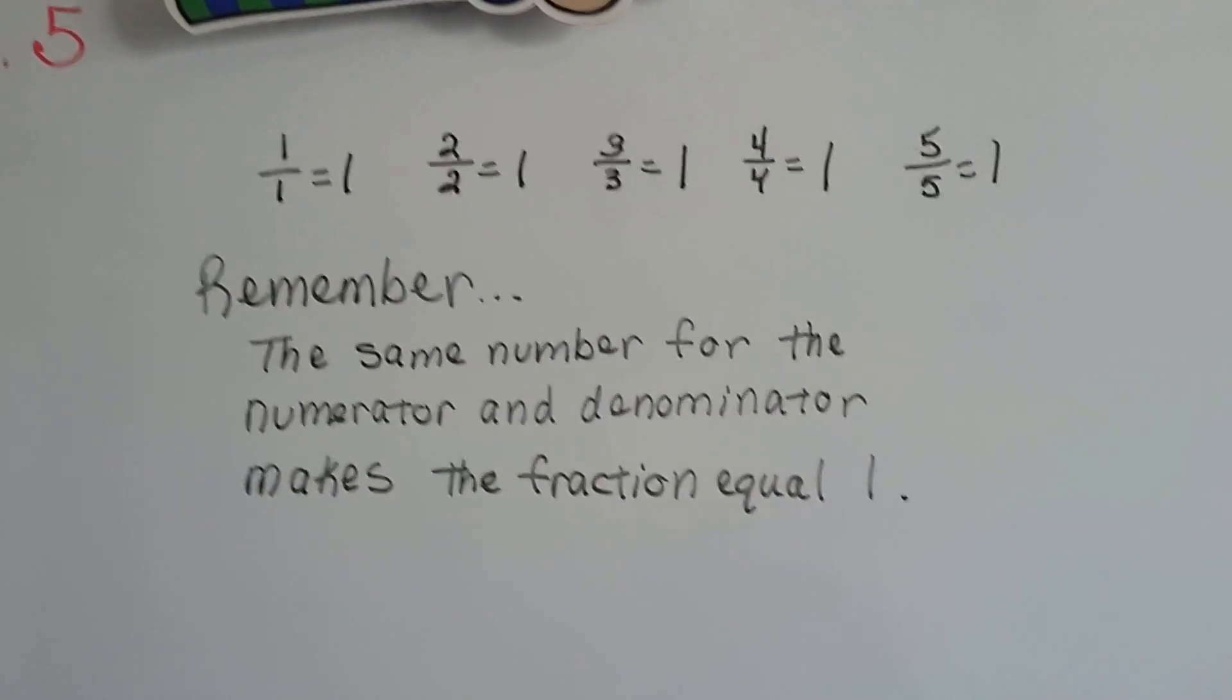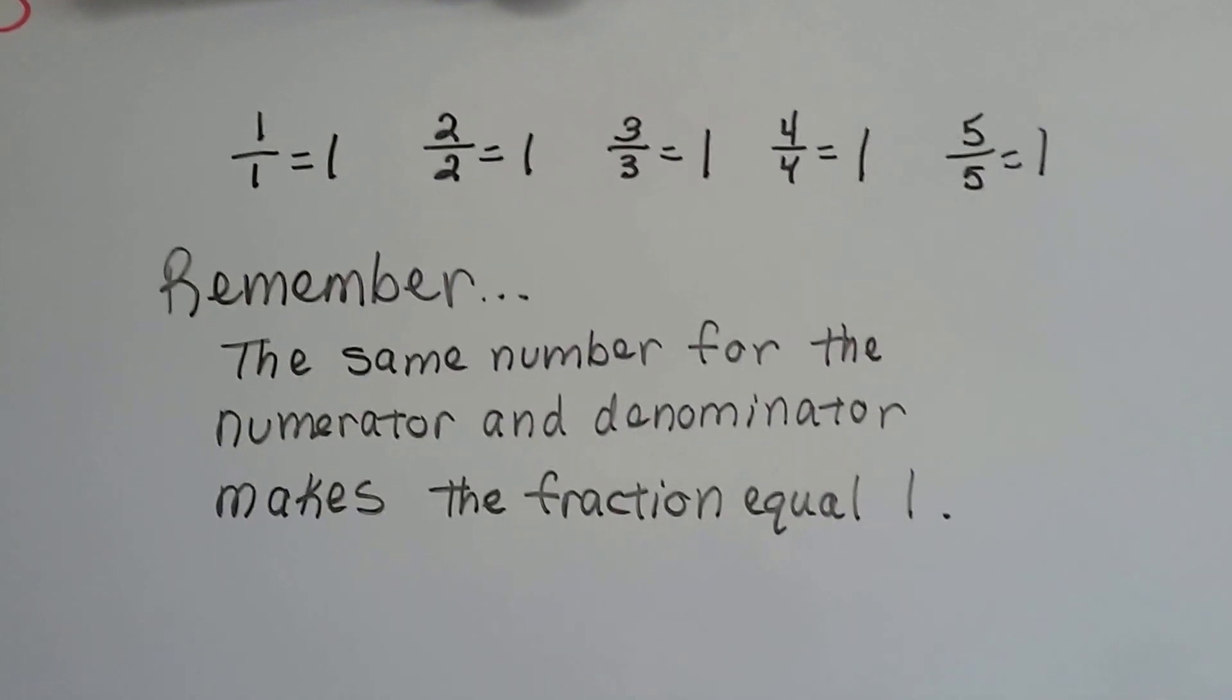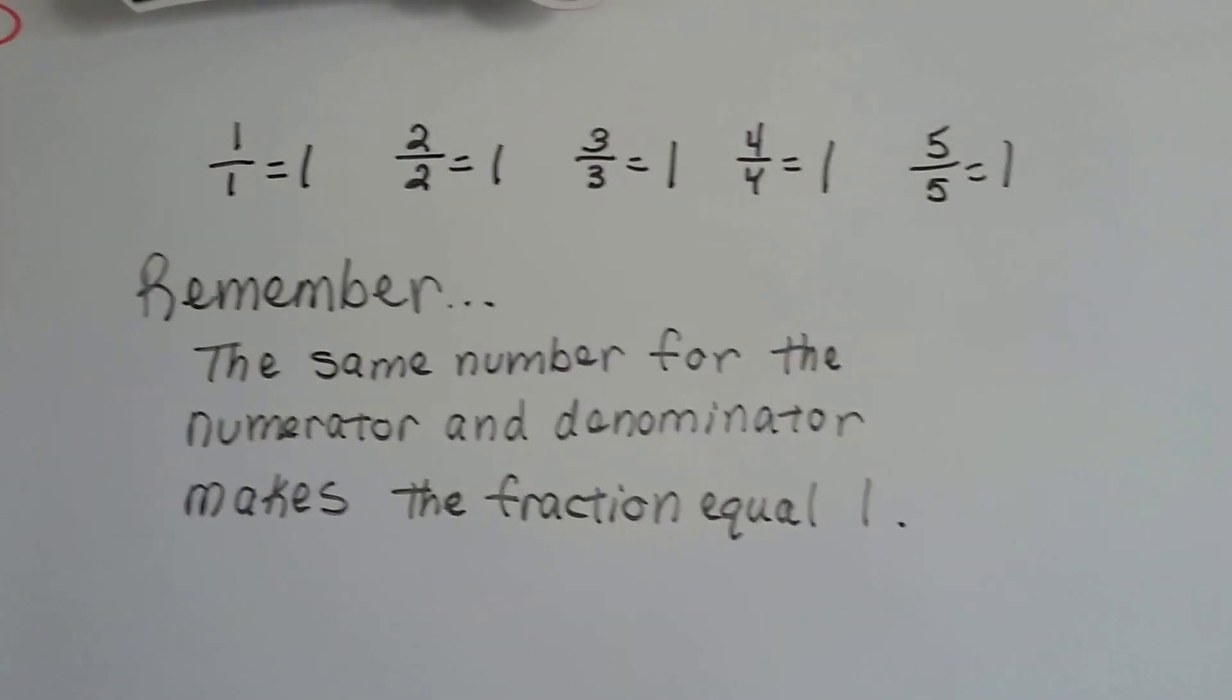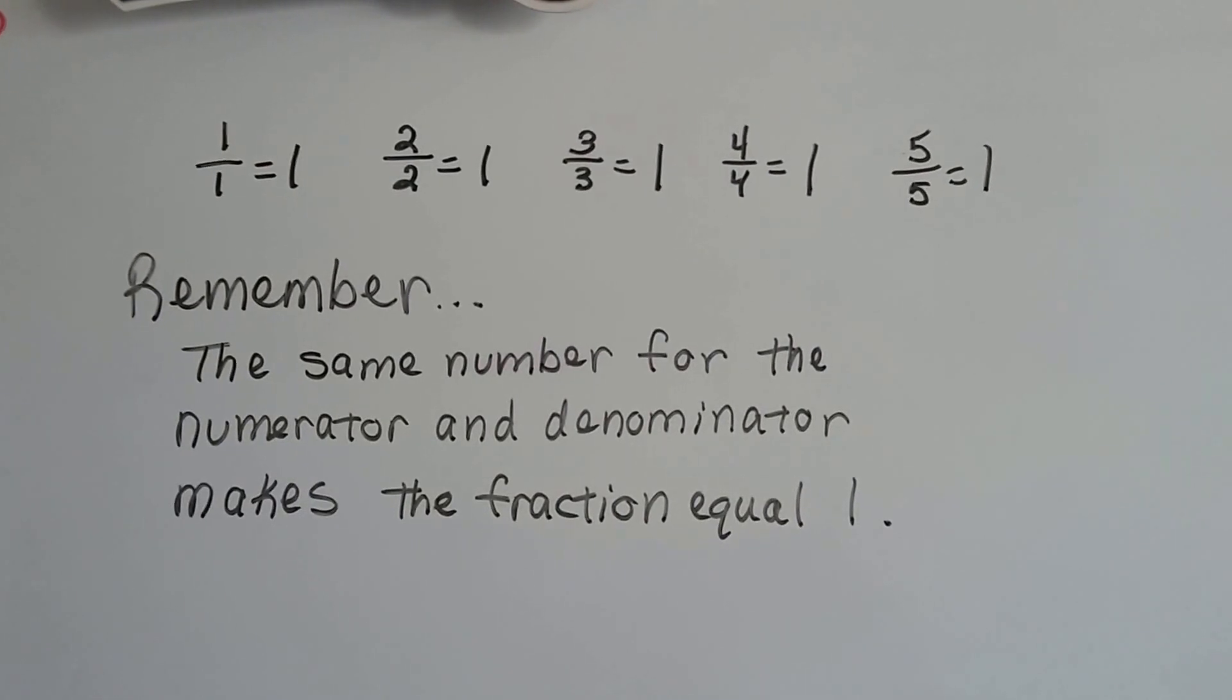It doesn't matter what the number is. You could have 99 99ths and it'll equal one, as long as the numerator and denominator are the same number.